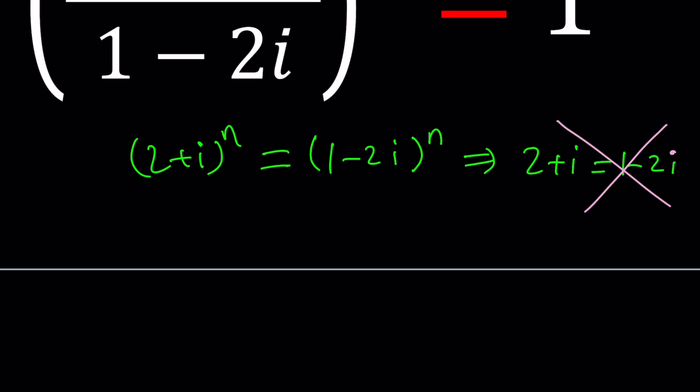One thing we know though, if we square two opposites we get equal values but 2 plus i and 1 minus 2i are not opposites either. So what are they? How are they related? Let's find out. Maybe we can use the polar form. Can we? Let's go ahead and give it a try.